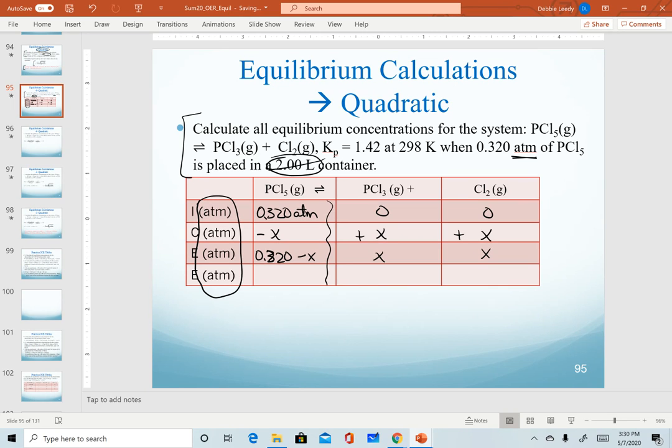Now for our next steps, we go through the same process. We have our equation written. We have our ICE table done. Our next step is to write our equilibrium expression. Of course, we're using pressures and we're given a Kp. We're going to use our Kp expression.